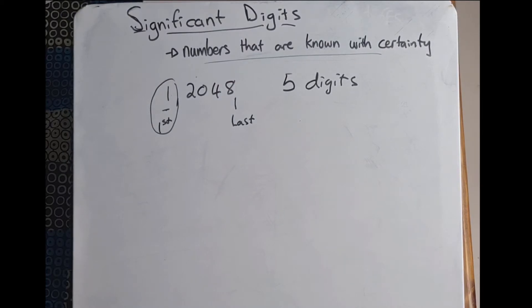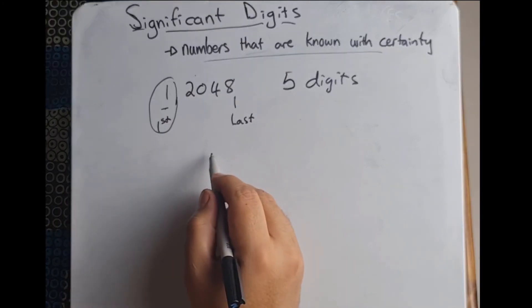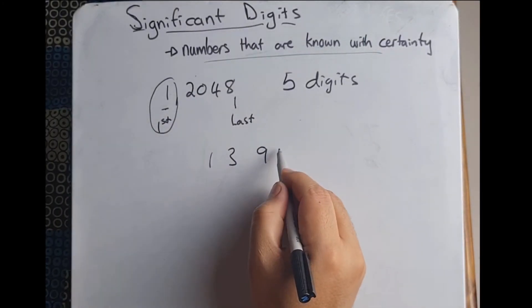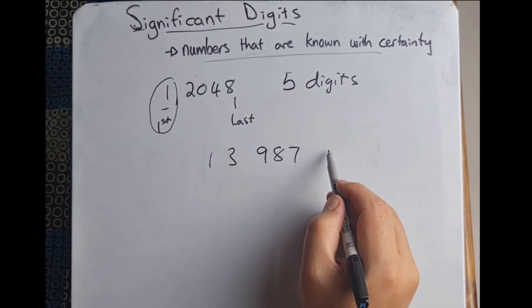Now, while we cannot just drop the zeros, can't just throw them away, if they are at the beginning or the end of a number they are not considered significant. So let's look at an example: 13,987,000.